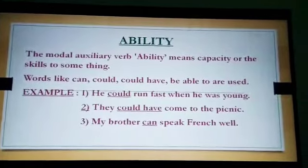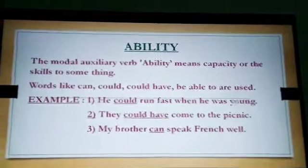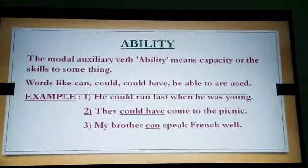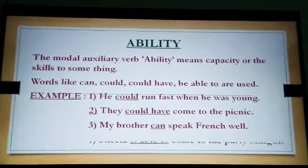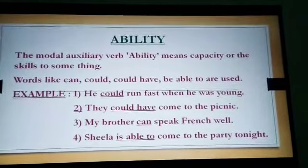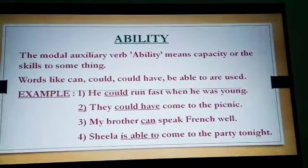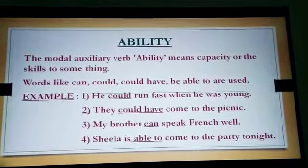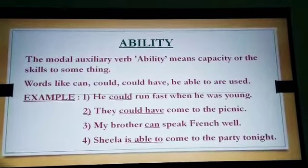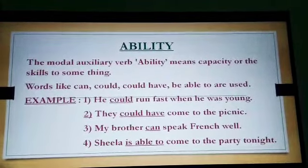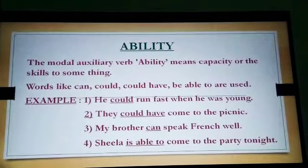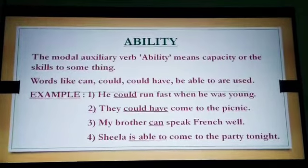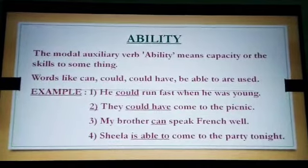The third example is: 'My brother can speak French well' — here 'can' is the ability modal auxiliary verb and 'speak' is the V1 form. The fourth example is: 'Sheila is able to come to the party tonight' — here 'is able to' is the ability modal auxiliary verb and 'come' is the V1 form. So words like can, could, could have, and be able to are used for ability.